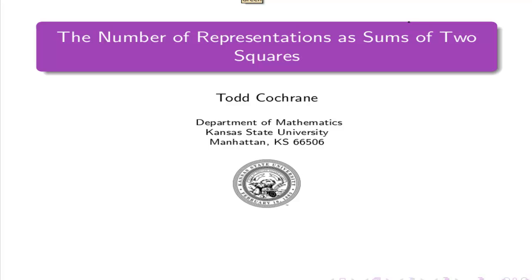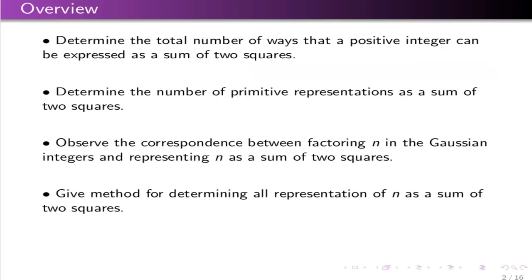Now we know exactly when an integer is a sum of two squares, so we want to move on to ask how many representations there are to express it as a sum of two squares. There are two types of representations. First, we want to determine the total number of representations, and second, we want to ask how many representations are there that are primitive — meaning that a and b are relatively prime when you write n as a² + b².